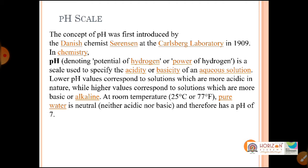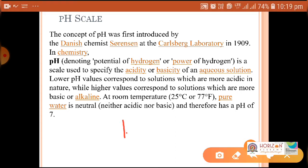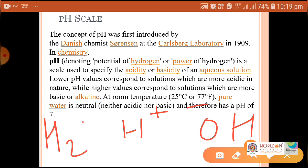At room temperature — 25°C or 77°F — pure water has a pH of 7. Water has both H⁺ and OH⁻ ions, so its acidic character and basic character are equal, making water neutral. Water itself is made of one hydrogen and one OH⁻, that is hydrogen radical H⁺ and hydroxide radical OH⁻.